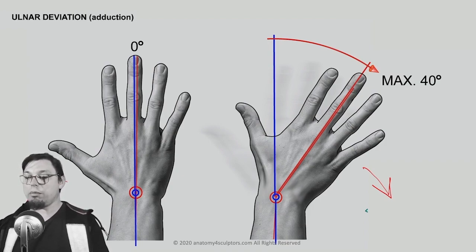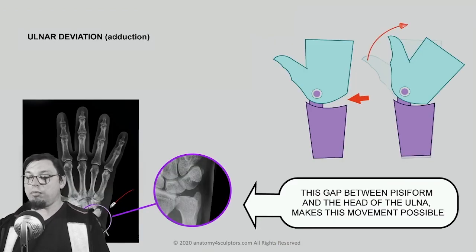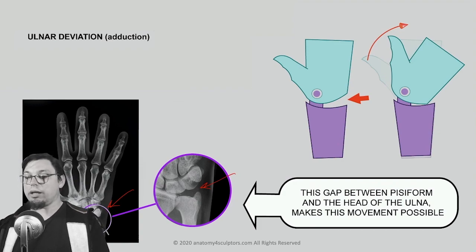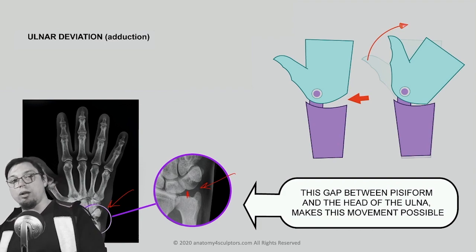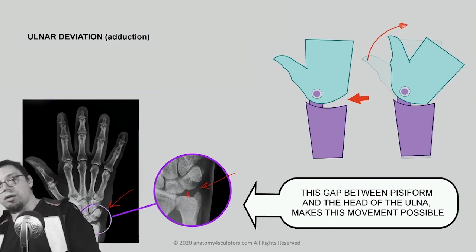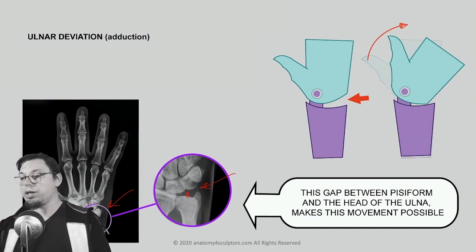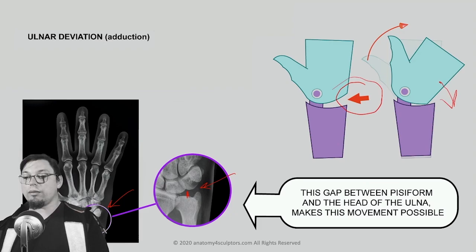On one side we can make maybe 40 degrees of movement, but on the opposite side we can make maybe only two to three degrees. This happens because between the ulna and the carpal bones there is a gap — the ulna doesn't articulate with the hand. There is only a small ligament connecting them, no real articulation, and that gap allows lateral ulnar deviation.